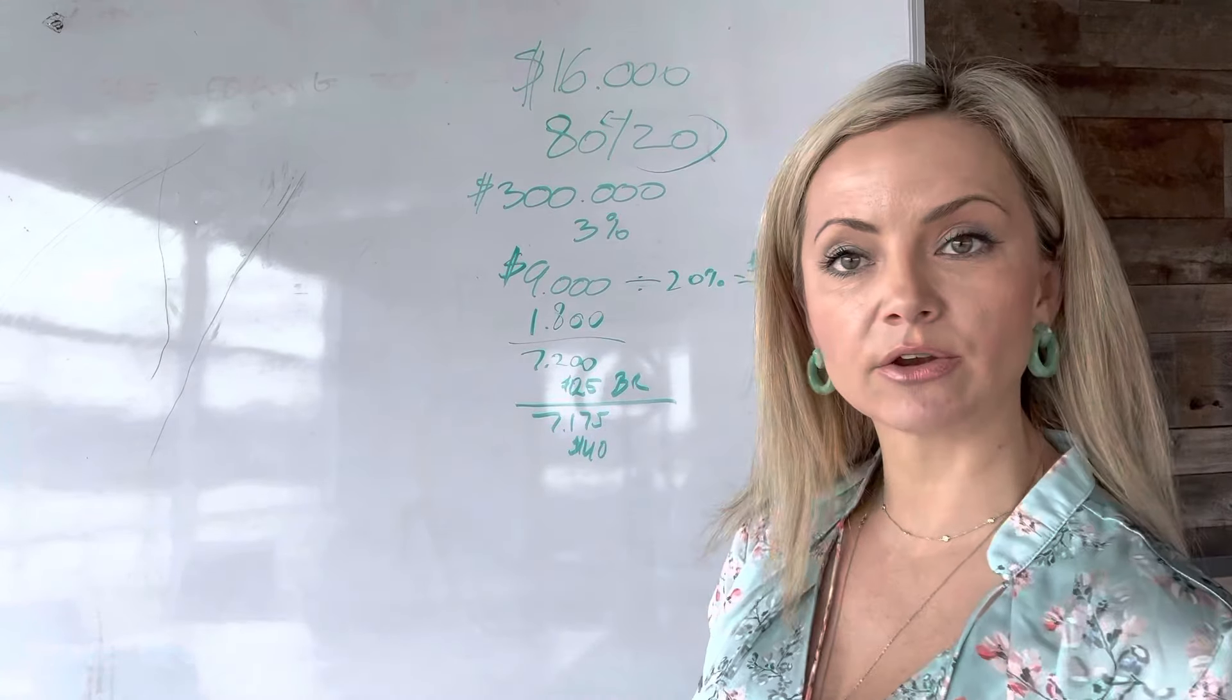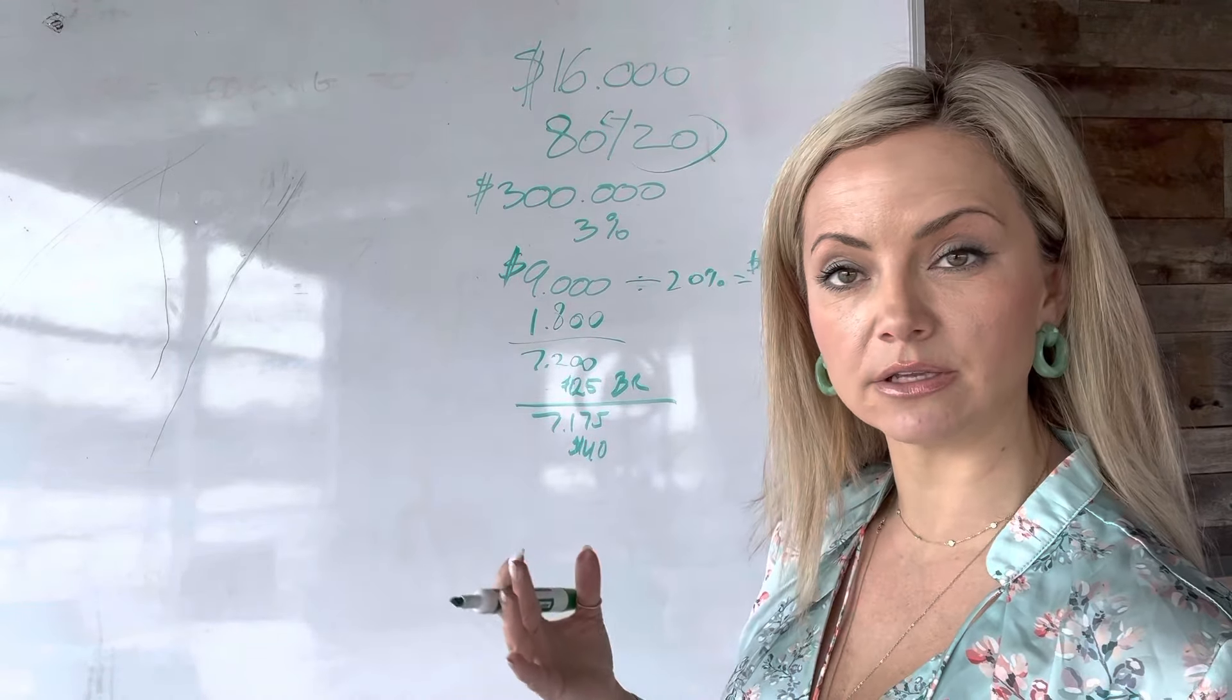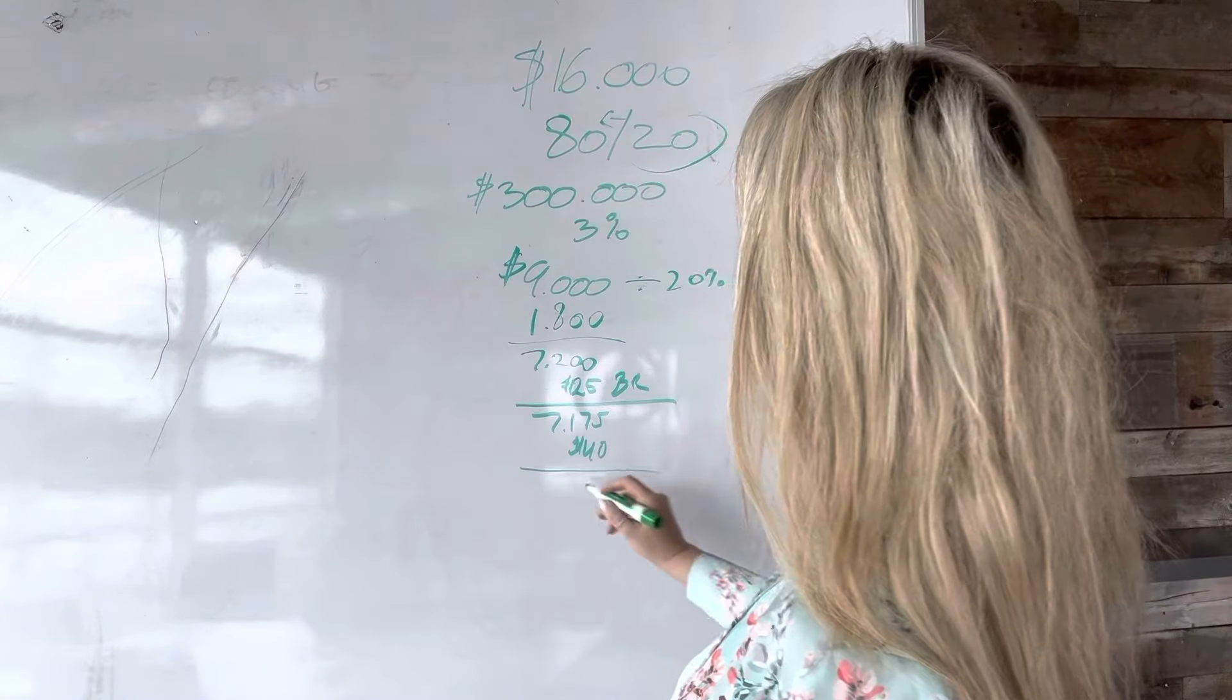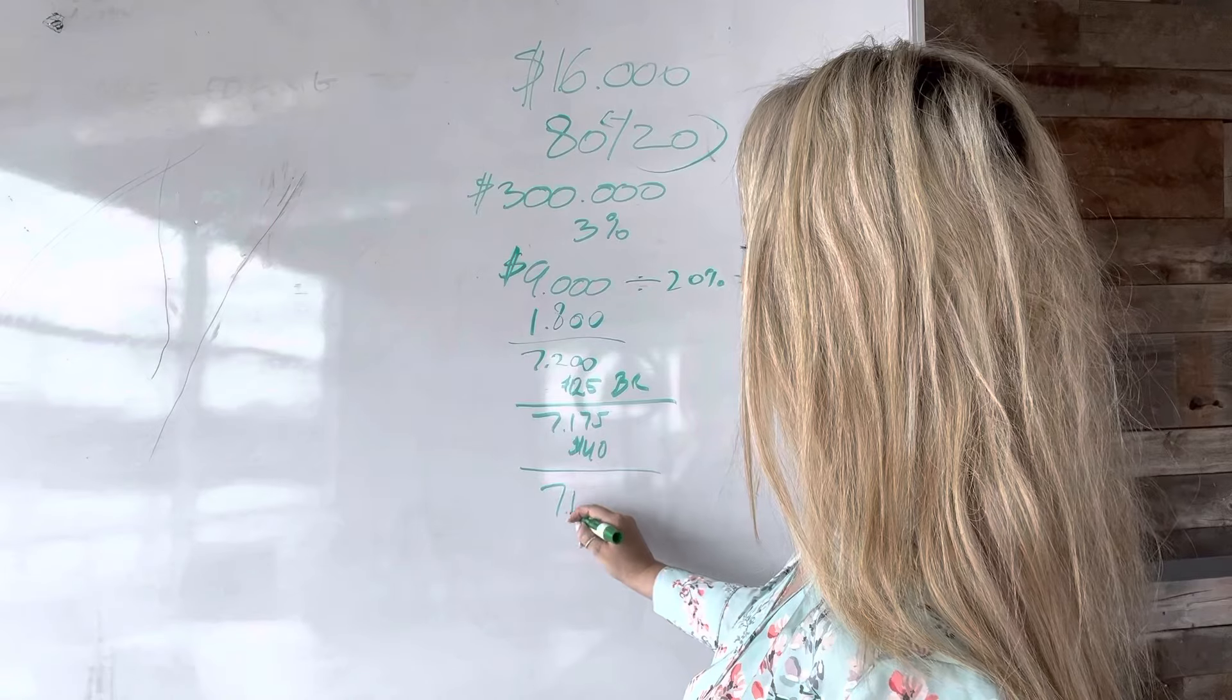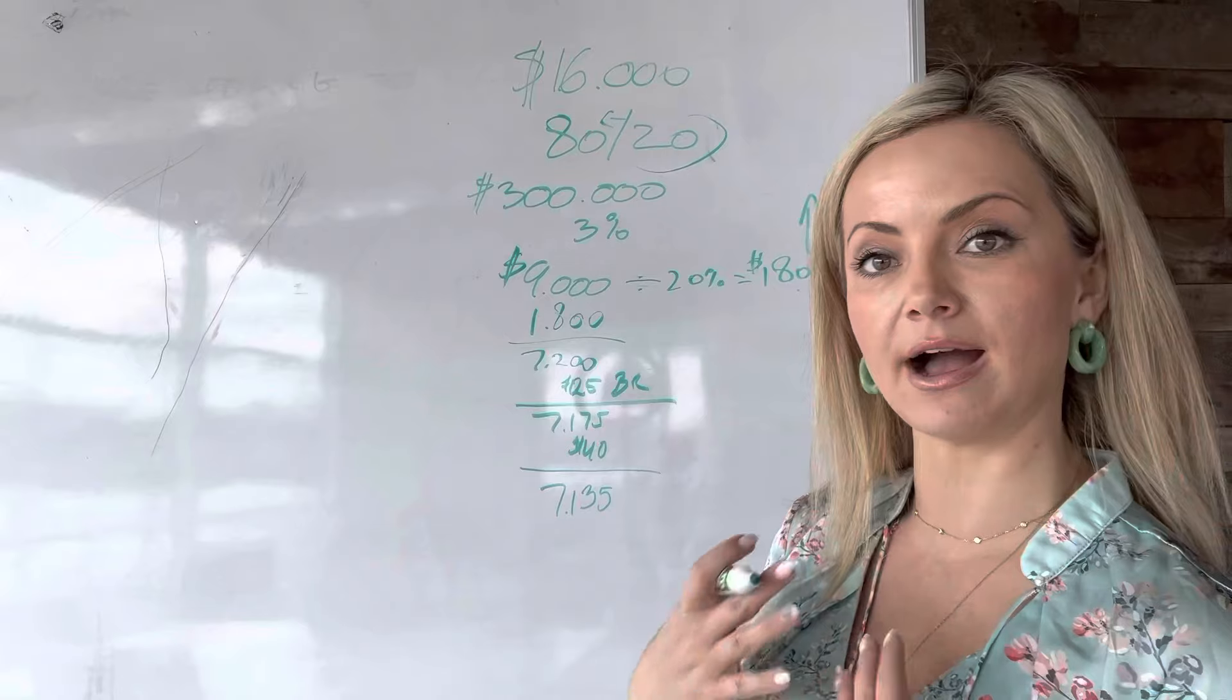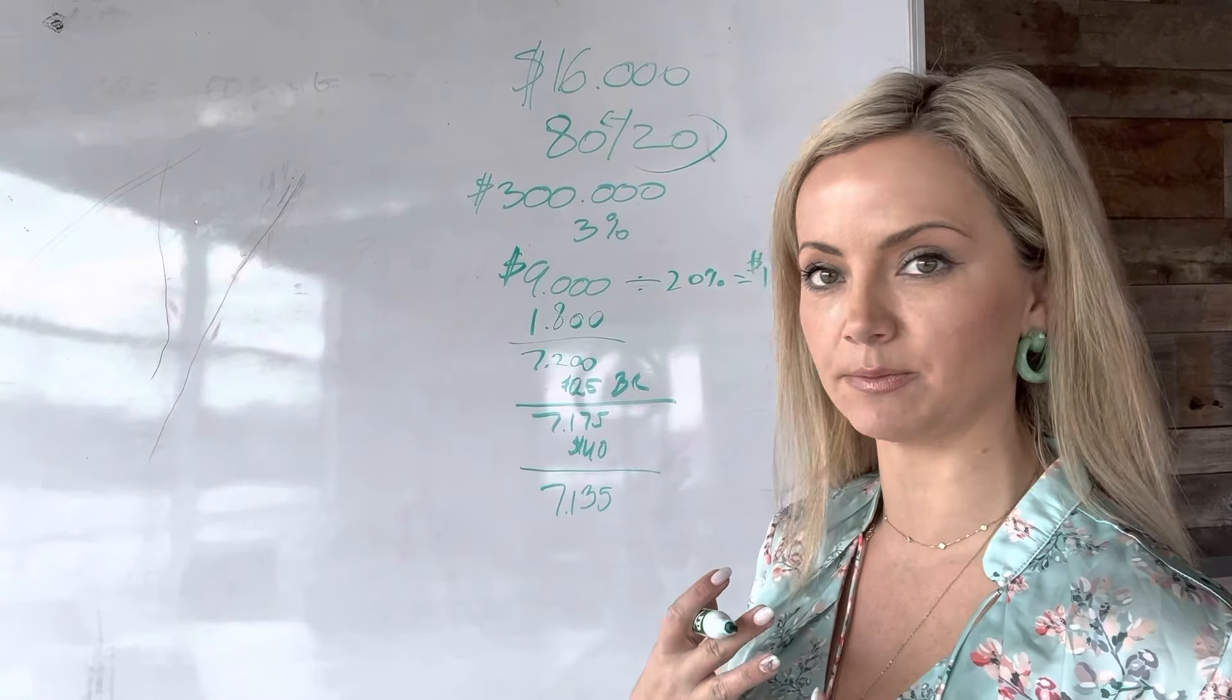E&O, which stands for errors and omissions. It's your legal fee. It's to make sure that you're legally covered and protected. So we're going to pay this $40 for that. That leaves me with $7,135. And these are the only two fees that I pay as an agent at EXP.